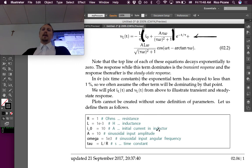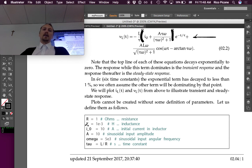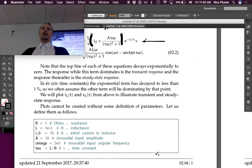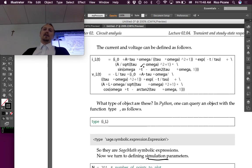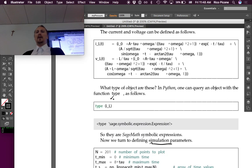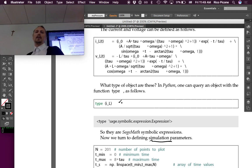Plots cannot be created without some definitions of parameters. I'm defining the resistance, the inductance, the initial current through the inductor, the amplitude of the current source A, omega the frequency of the current source, and tau we solved for was L over R. Then this is just defining the equations in this Python language - it's actually SageMath module. I did this little thing just so you could see what type of object these are.